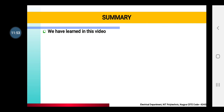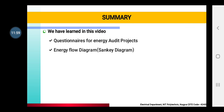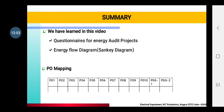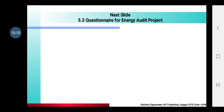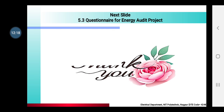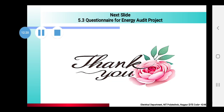Summary: in this video you have learned about the questionnaire for energy audit projects and the energy flow diagram. PO mapping: here we have mapped PO1, PO2, PO3, PO10, and PSO1. The next slide will be on other questionnaires for energy audit projects. Thank you and keep learning.